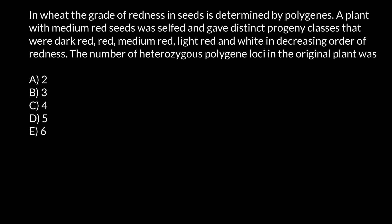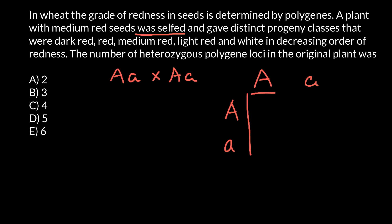Let's assume that only one gene controls this trait. In this case we are going to have a cross of the genotype that is heterozygous for gene A with the same genotype. According to our problem, a plant with medium redness was selfed, so parent 1 and parent 2 have to be of the same genotype. Now imagine we have a simple Punnett square here.